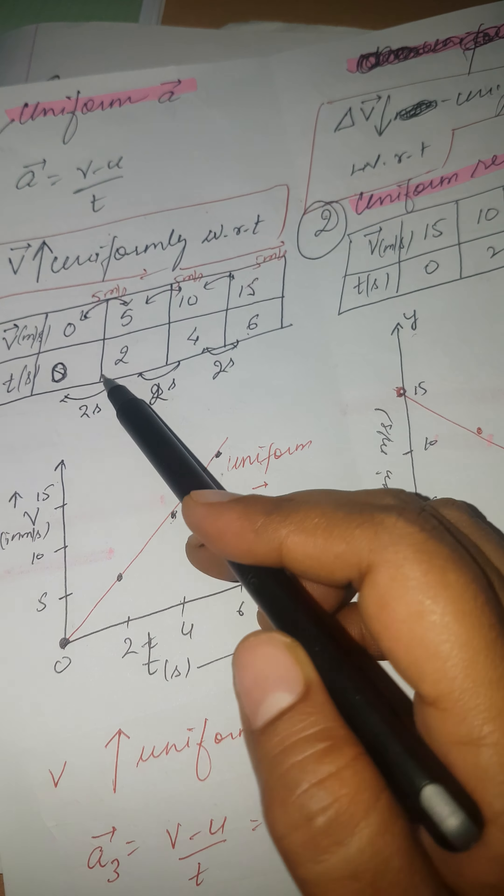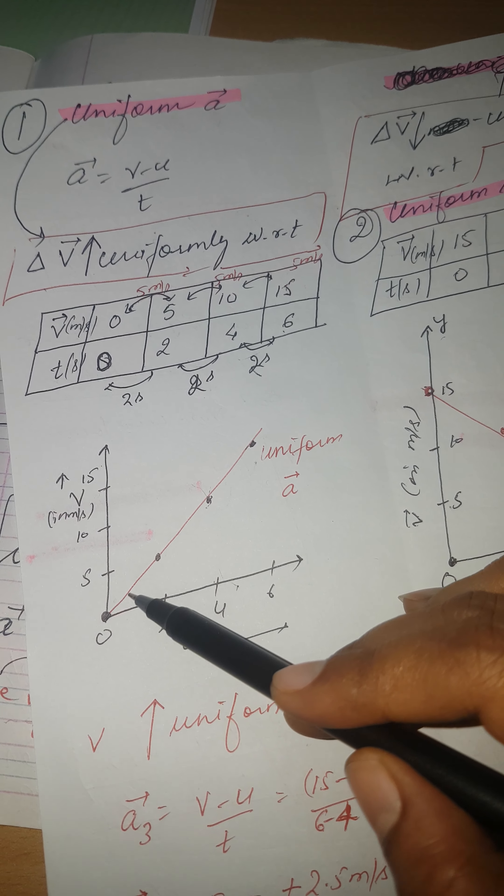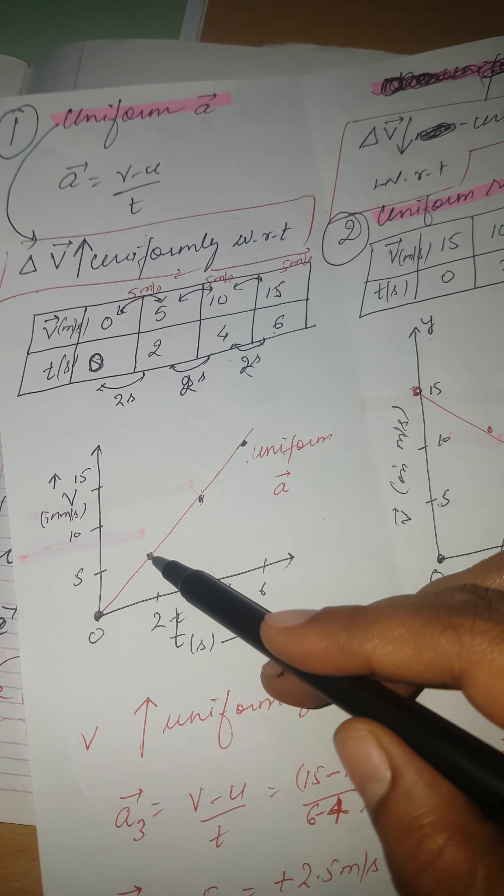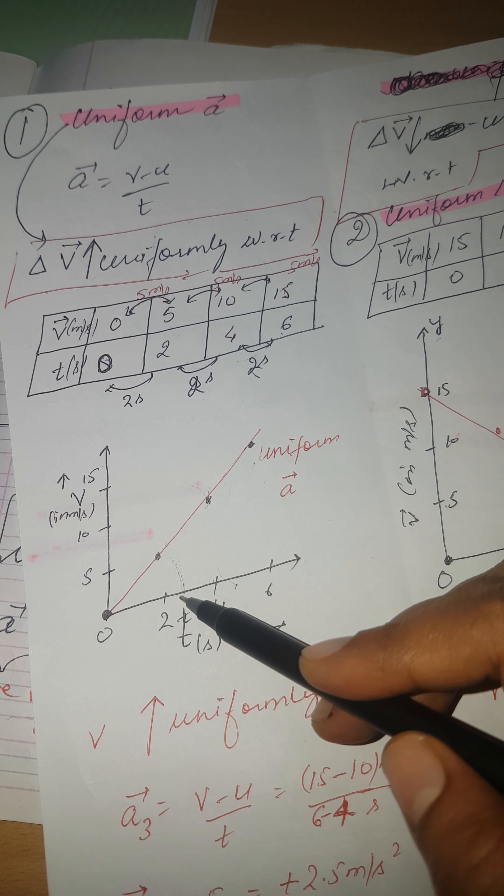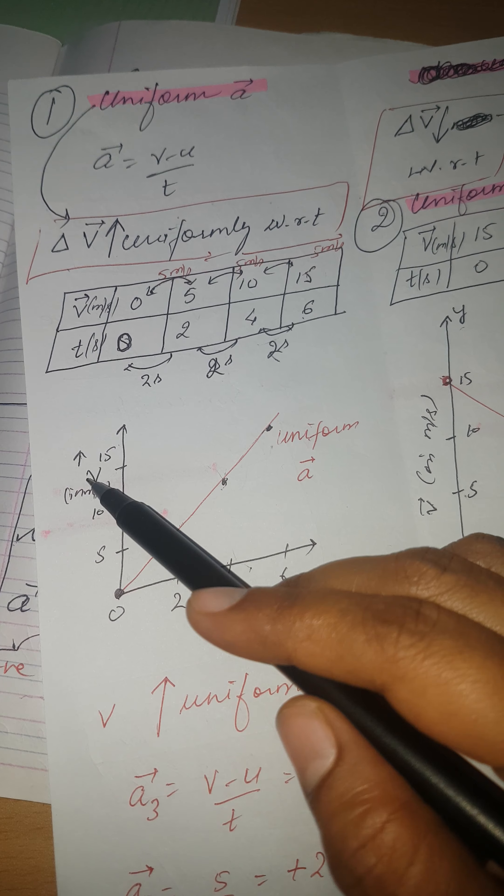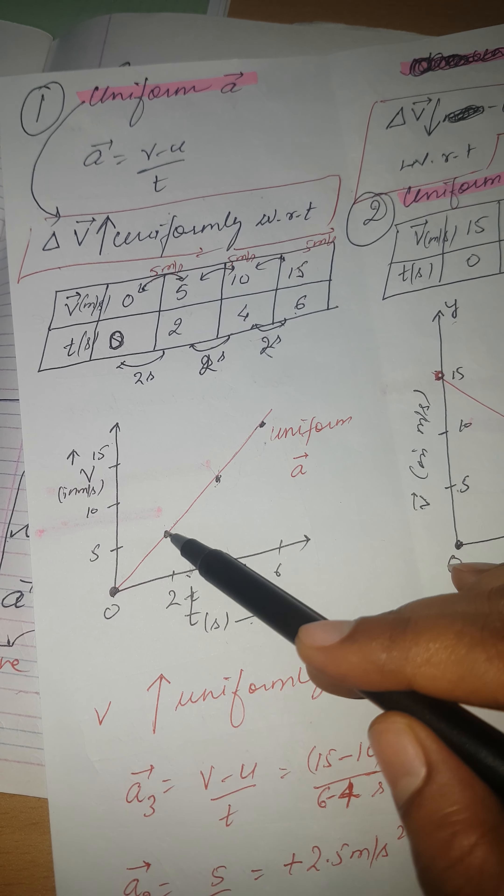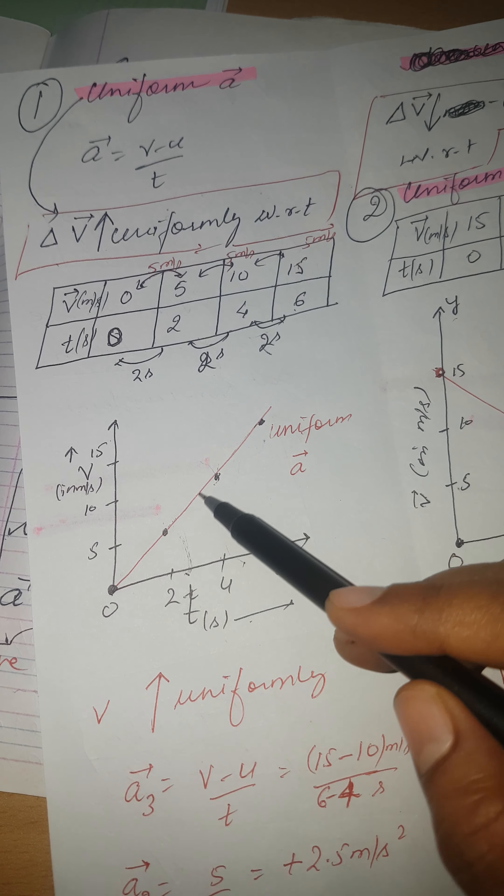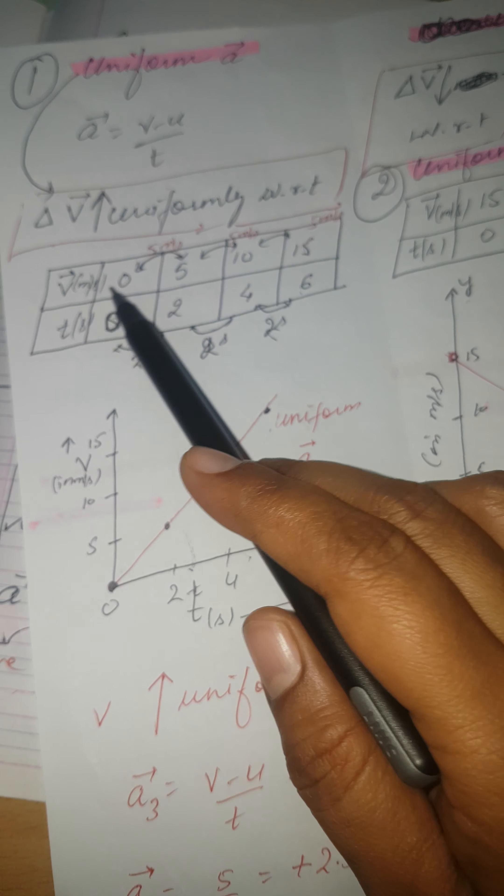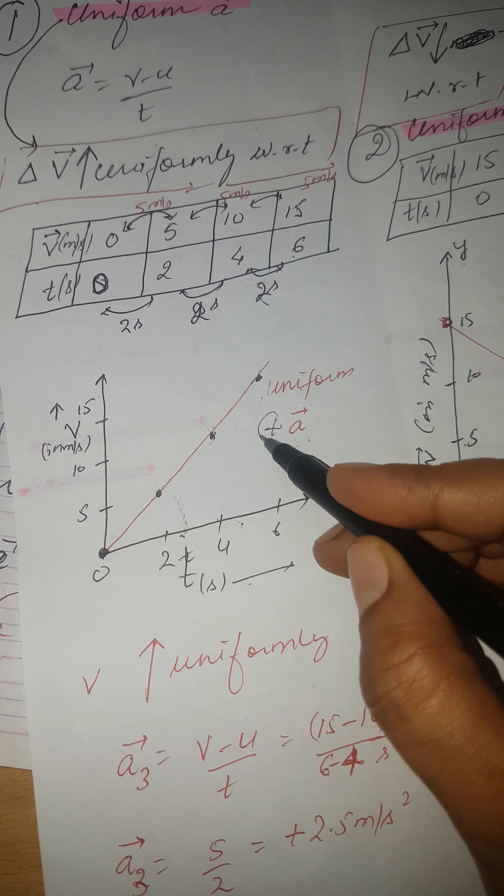Velocity is changing, velocity is increasing but at a uniform rate, with 5 meter per second in every 2 seconds. If you are going to plot this graph using this data, you will find that this line comes out to be straight line inclined to x-axis. That we have discussed in uniform motion case also. Now we have taken graph between V and T, velocity and time. This is how you get the line for uniform acceleration.